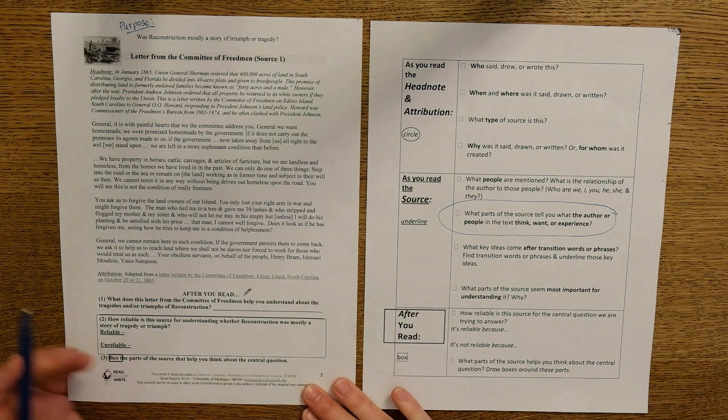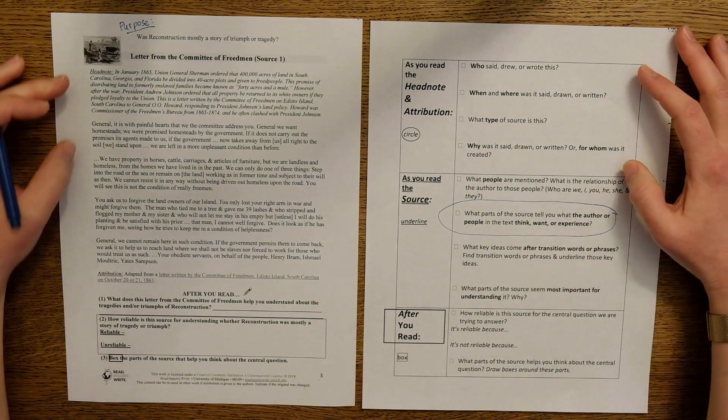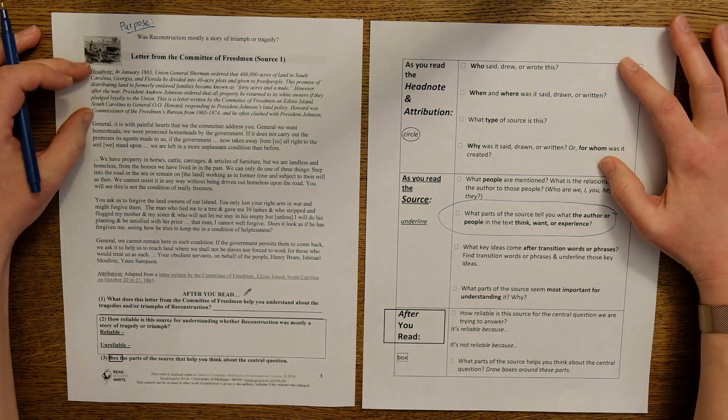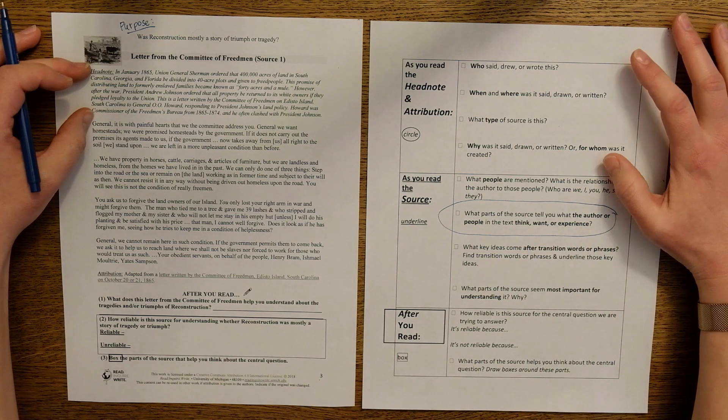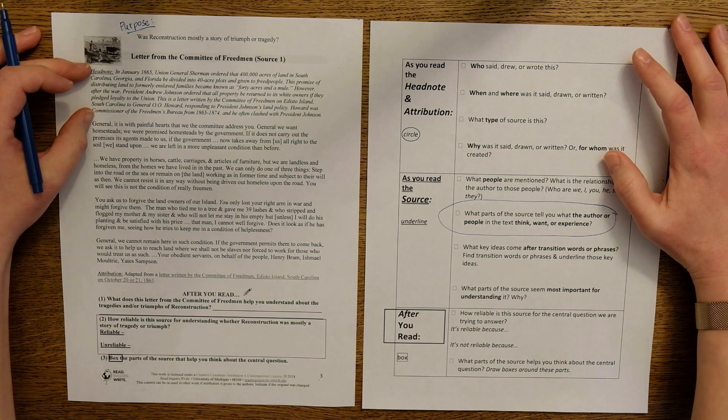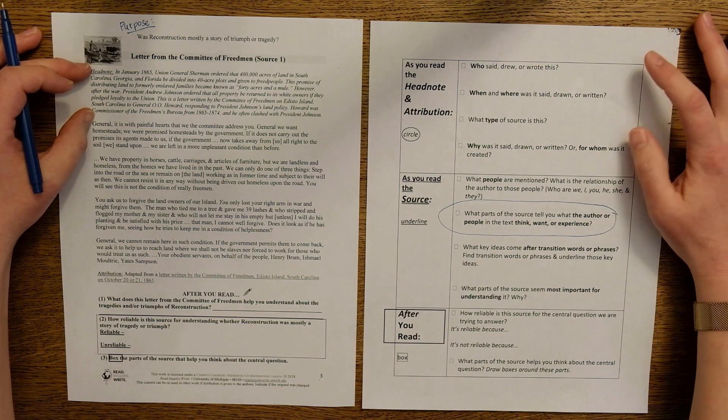I'm going to start with the attribution and the head note using the top part of the bookmark to think about who created the source, when and where it was created, and why the source might have been created.